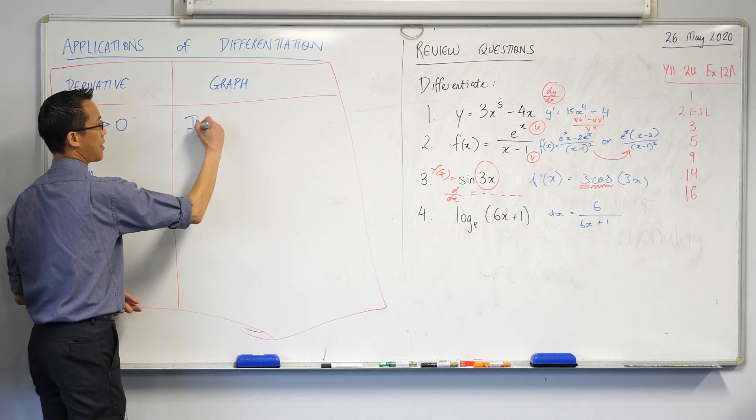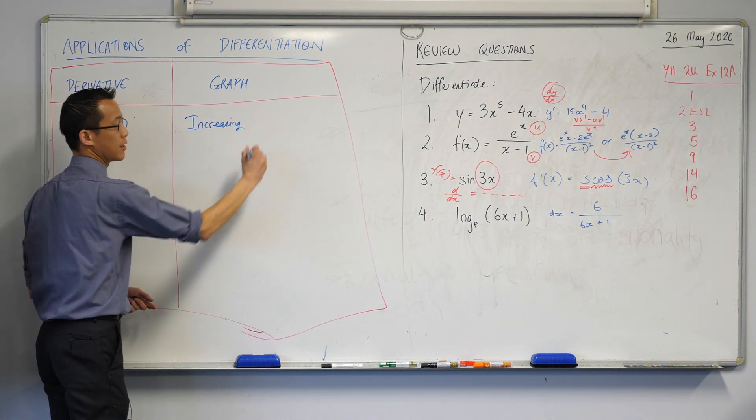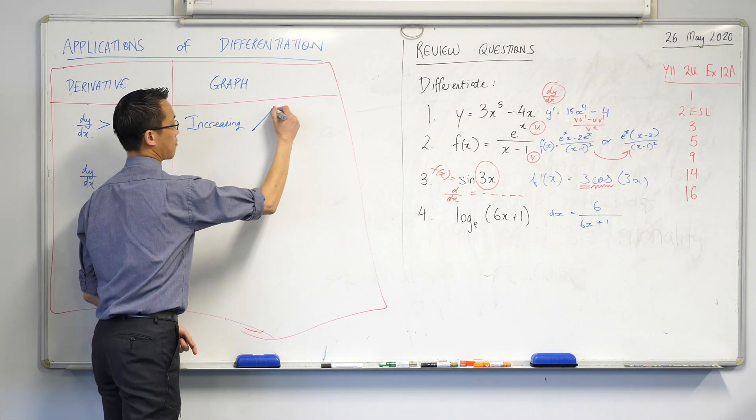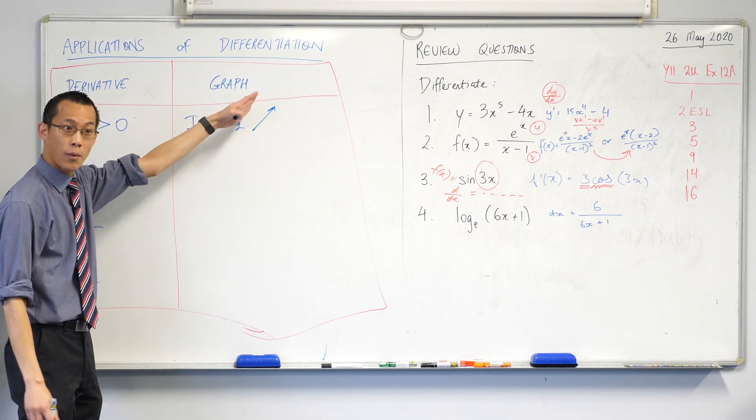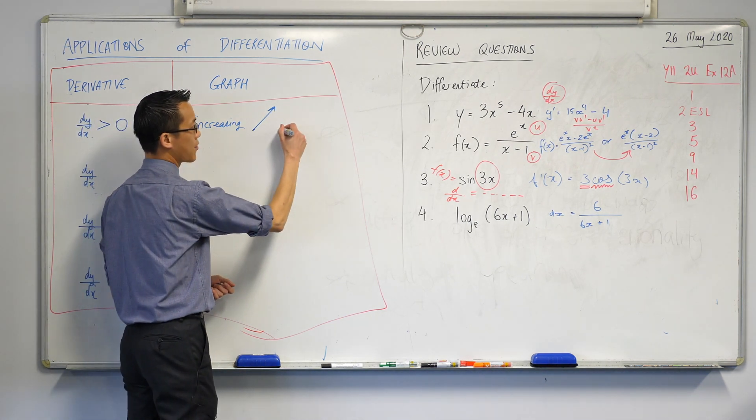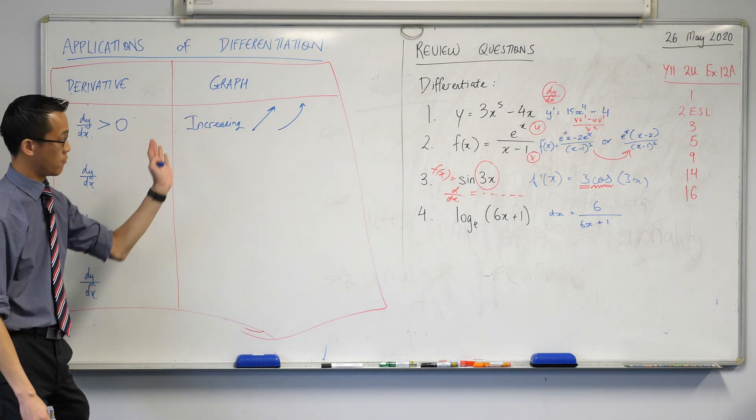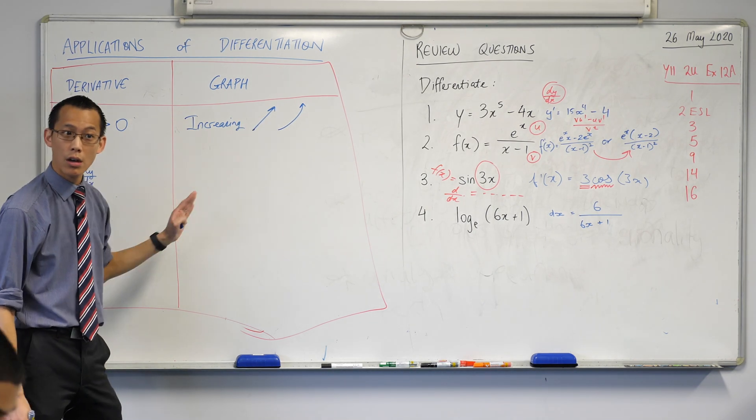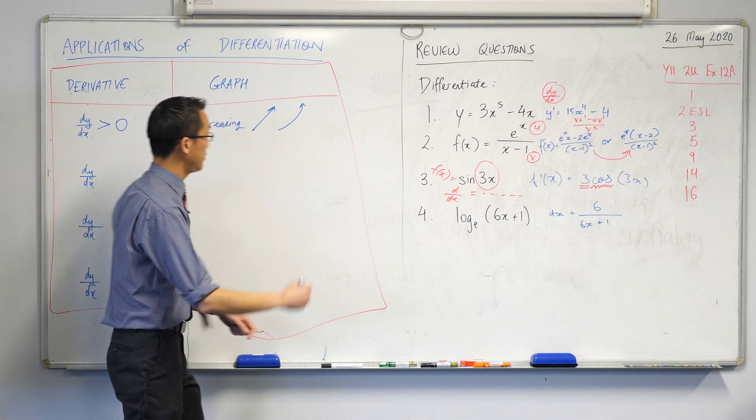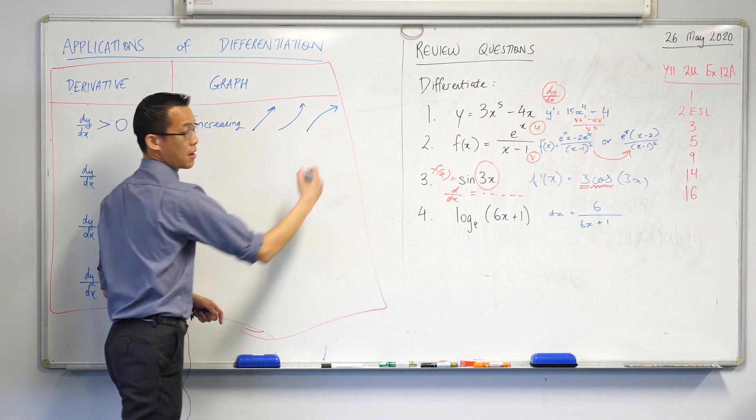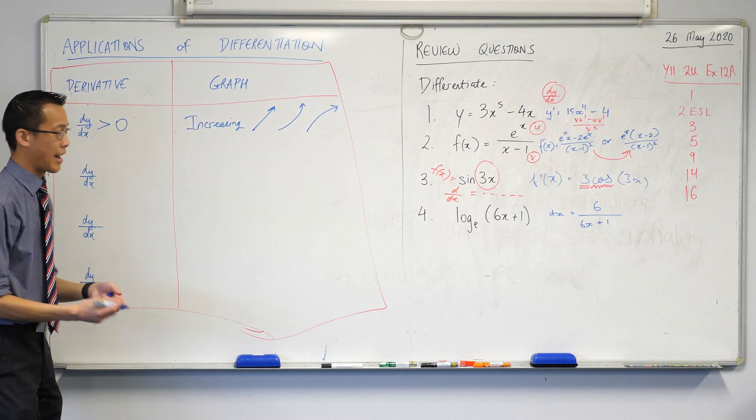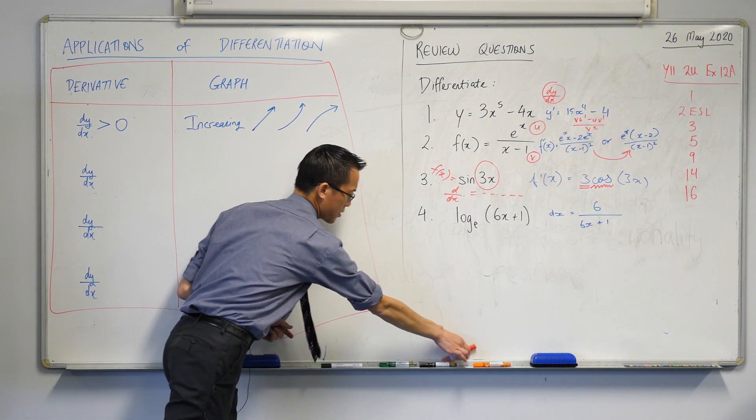So we would say the word we use for that is it's increasing. Now just so you have a visual cue for this, what does this look like? Well your function is going up. A straight line going up would have a positive derivative. If you had part of a parabola going like that, just the right-hand part, that's also going up, it's increasing. You could have something like a log function, it would look slightly different, but it's still going up as you go from left to right. We can interpret that from a positive derivative.